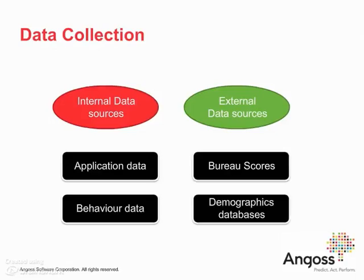External data sources fall into two types. One important type is bureau scores — aggregate scores provided by vendors such as Fair Isaac, Equifax, TransUnion, and Experian. These help identify the risk level associated with a customer historically. The other type is demographics databases, such as Acxiom and Mosaic, which provide the demographics profile of the customer. Because these databases contain very large numbers of variables and packages, we may end up with literally thousands and thousands of variables in the data.